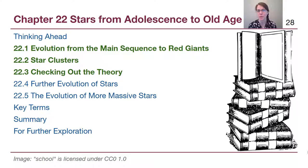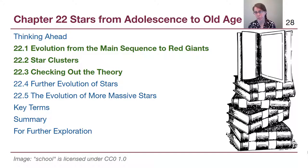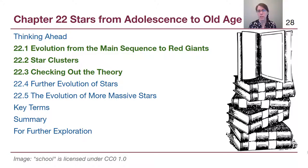Welcome to chapter 22 and welcome back to module 5. In this chapter we are going to talk about the middle age of stars — once they have already formed, which we talked about in chapter 21, and before they go through their final death throes, which we will talk about in chapters 23 and 24. This particular video is going to focus on how star clusters help us check our understanding of stellar evolution, and we will need them again in module 6.